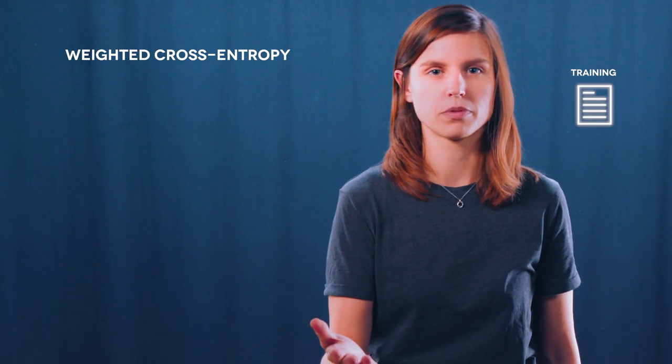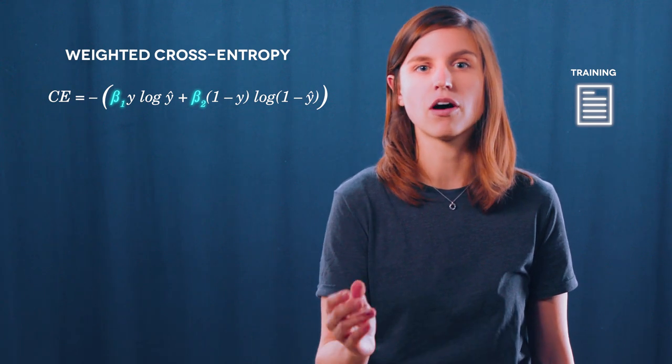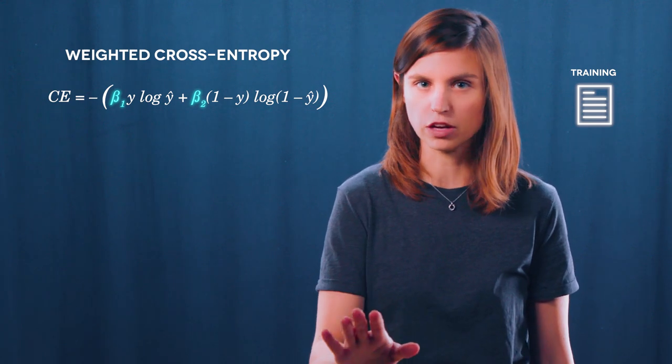First off, keep in mind that there are much more pixels corresponding to the background than to the vehicles in very big satellite images. Thus, we have a problem of class imbalance. How can you overcome that? The trick is to take a weighted loss, such as a weighted cross-entropy. With this loss, weights are used to penalize more the errors made on the less frequent class, vehicles.